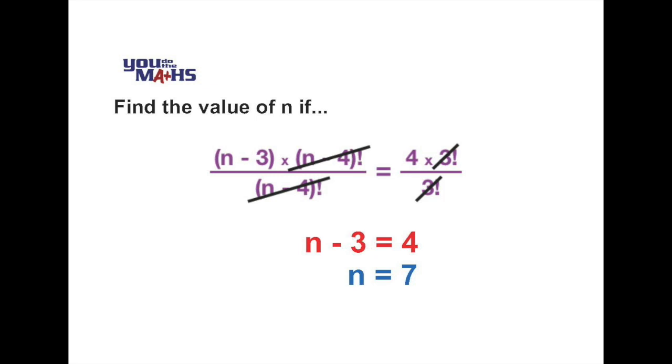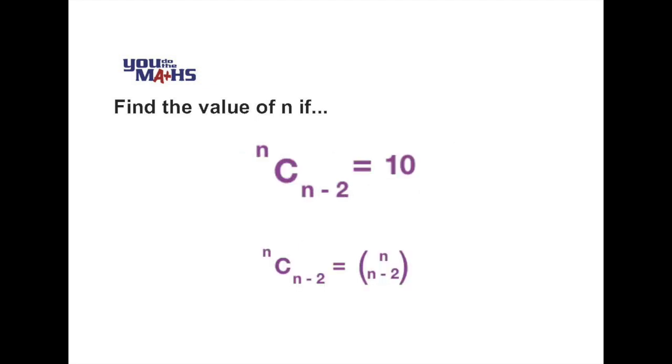Let's have a look at another problem where we're using combination notation to solve an algebraic problem. In this case we're being asked to find the value of n such that n choose n minus 2 is equal to 10. So we'll use the formula first of all to express n choose n minus 2.